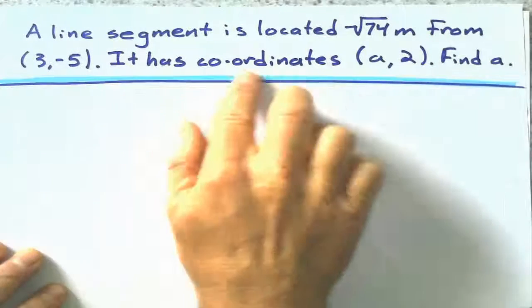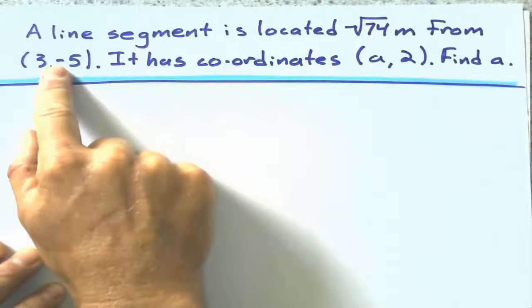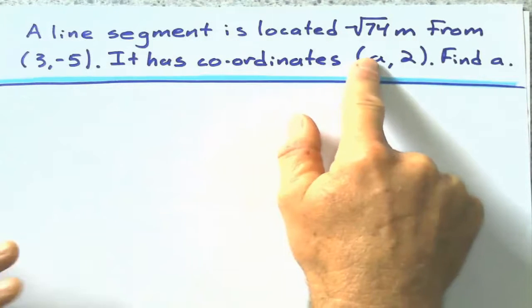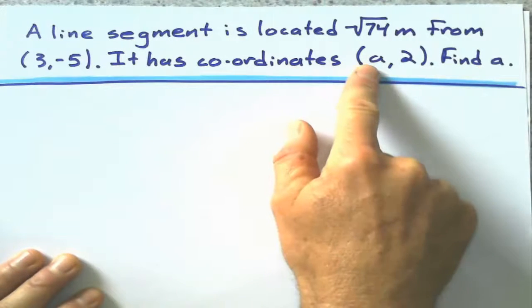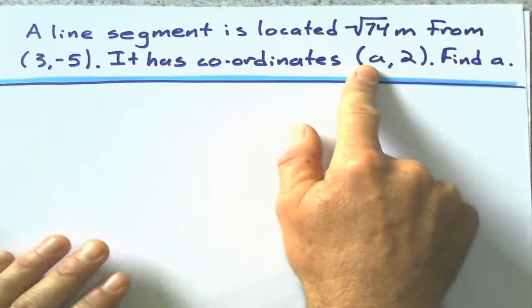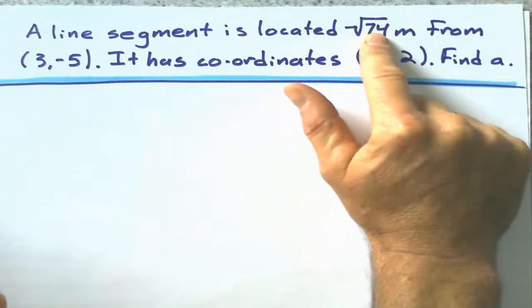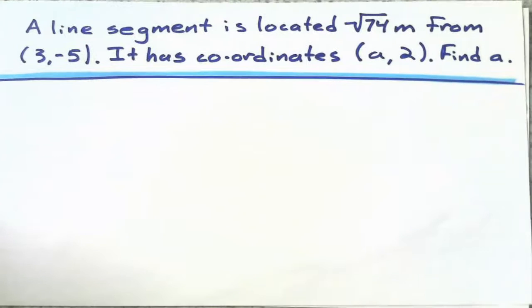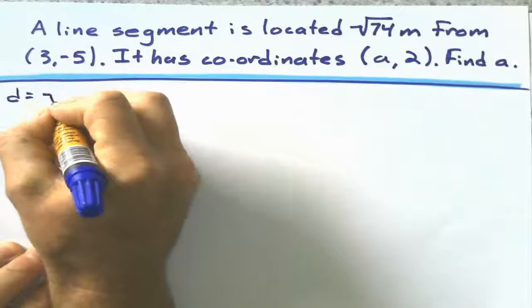I say, okay, I've got a line segment that is the square root of 74 meters from this point here. And the other end of the segment has coordinates something, 2. Alright, find what that x-coordinate would be. I didn't put x, I put a. And you'll see why I wrote this as the square root instead of an actual number. Alright, well, first of all, I guess we'll just start with the distance formula.